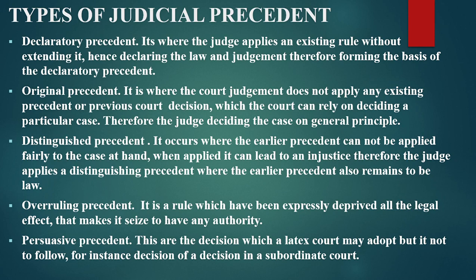One of the different types of judicial precedent is declaratory precedent. It is where the judge applies an existing principle without extending it, hence declaring the rule, and the judgment therefore forms the base of the declaratory precedent. This is where the judge applies a certain case rule in determining a case without extending or elaborating it.